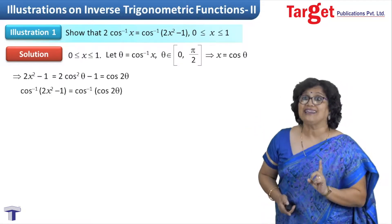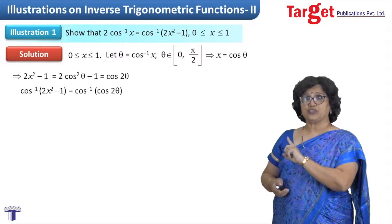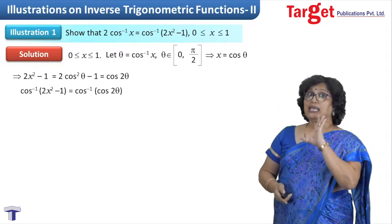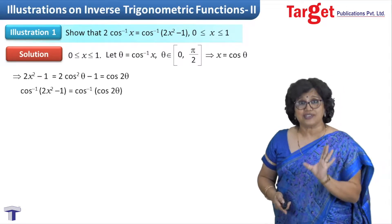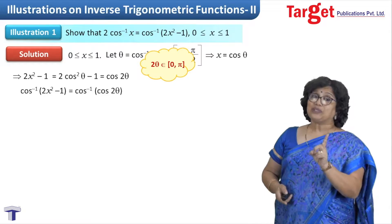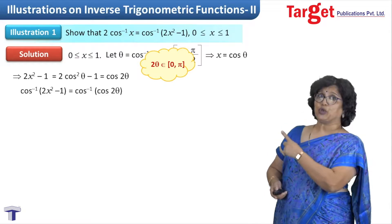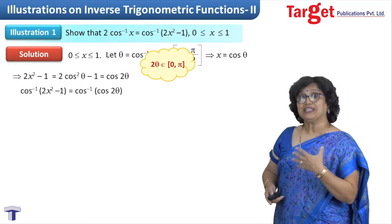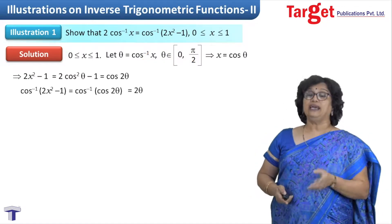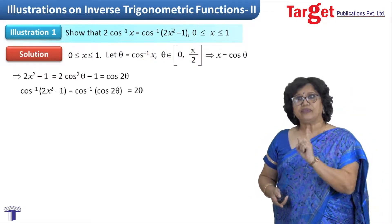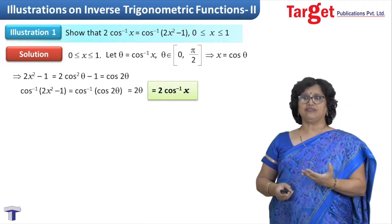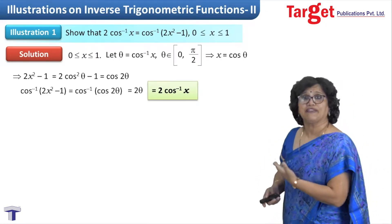Looking at the right hand side: cos⁻¹(2x²-1) becomes cos⁻¹(cos2θ). Can I write this straight away as 2θ? I need to check where 2θ lies. Since θ ∈ [0, π/2], 2θ lies in [0, π], which is exactly the range of cos⁻¹. So I am free to write it as 2θ, and substituting back θ = cos⁻¹x, this becomes 2cos⁻¹x.